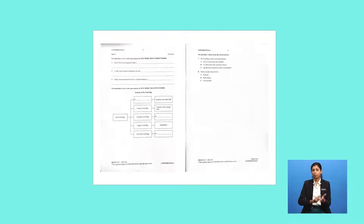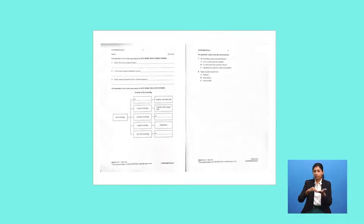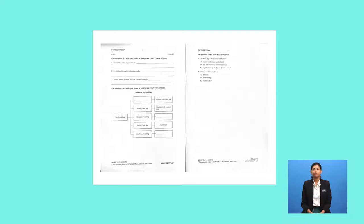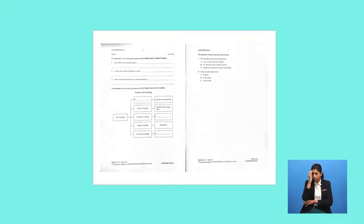Part one consists of eight questions. The first six questions require you to fill in the blanks with short answers of not more than three words. The questions could come in the form of completing a sentence or in the form of a graphic organizer, like a flowchart. Then you'd have two multiple-choice questions — A, B, C, D — where you pick an answer. That's part one.